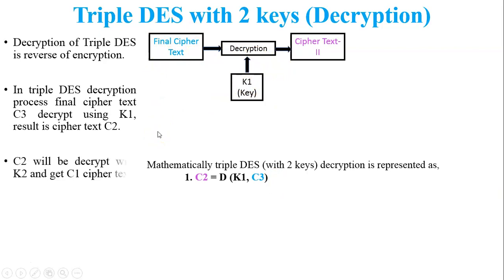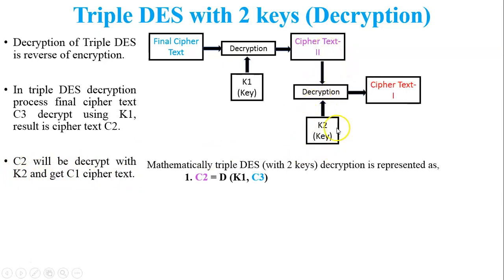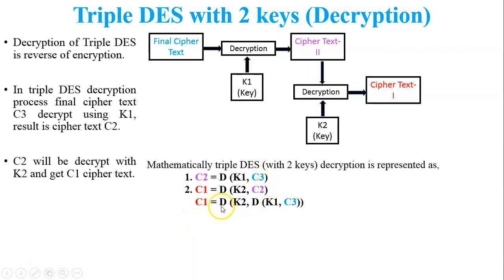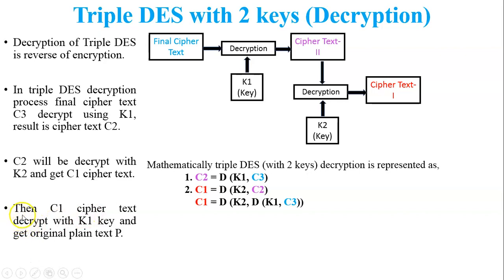Second, C2 is decrypted with K2 to get C1. In the figure, the second decryption process takes inputs C2 and K2, generating C1. Mathematically: C1 = D(K2, C2). Substituting C2 from equation one: C1 = D(K2, D(K1, C3)).